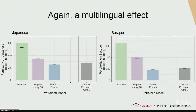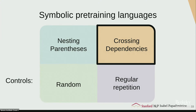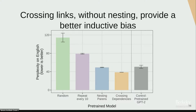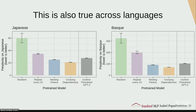This is again a multilingual effect — we see the same results across languages. Going back to what we're trying to disentangle from the nesting parentheses: how do crossing dependencies act as an inductive bias? We see that crossing links without nesting are actually better than nesting. Even without any constituent structure, this wide-ranging linking idea — being ready for things to happen at a distance — is a good inductive bias.